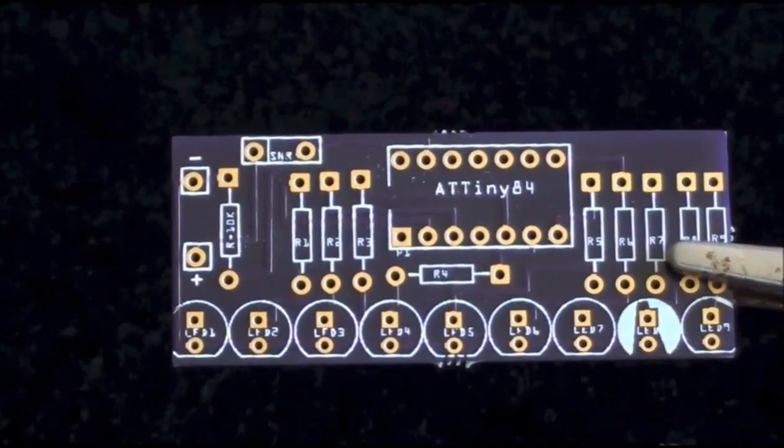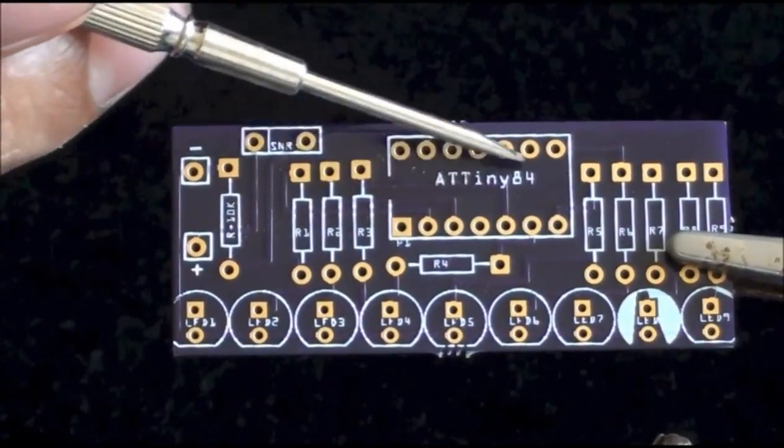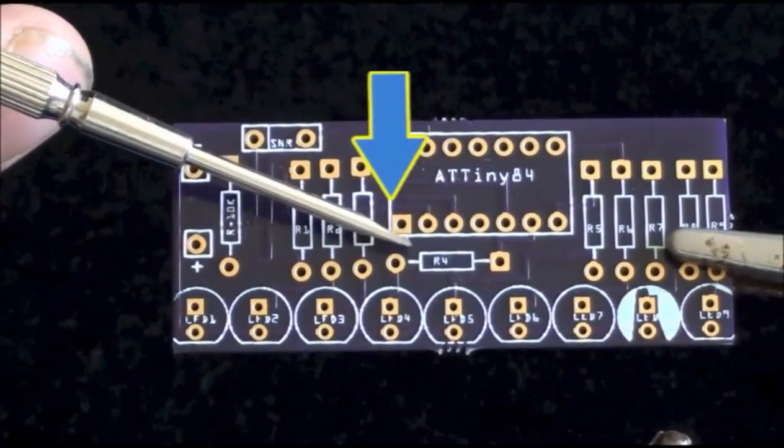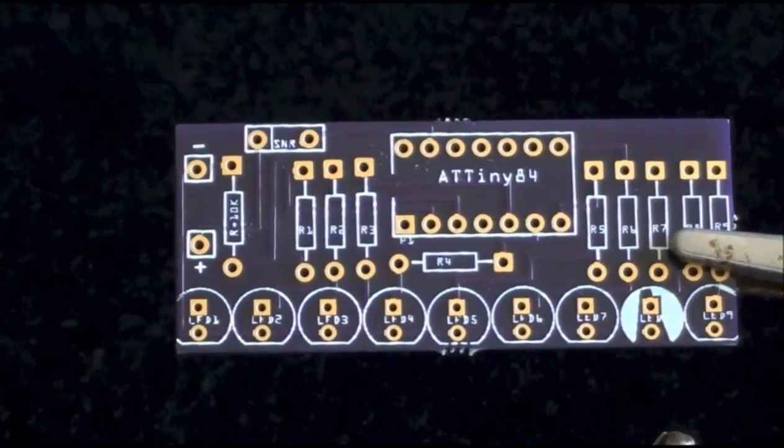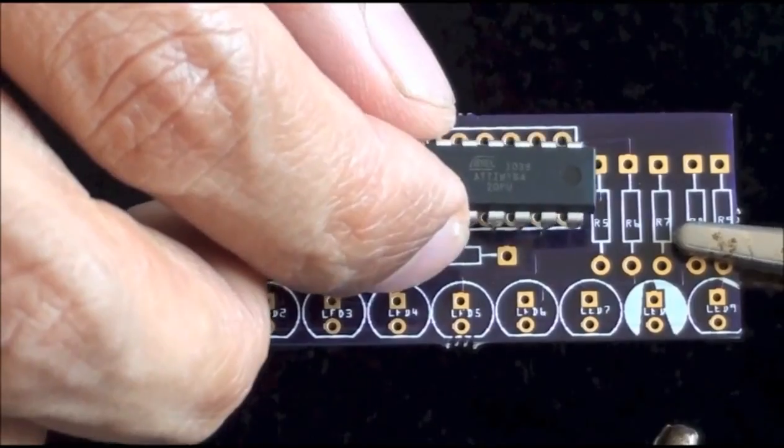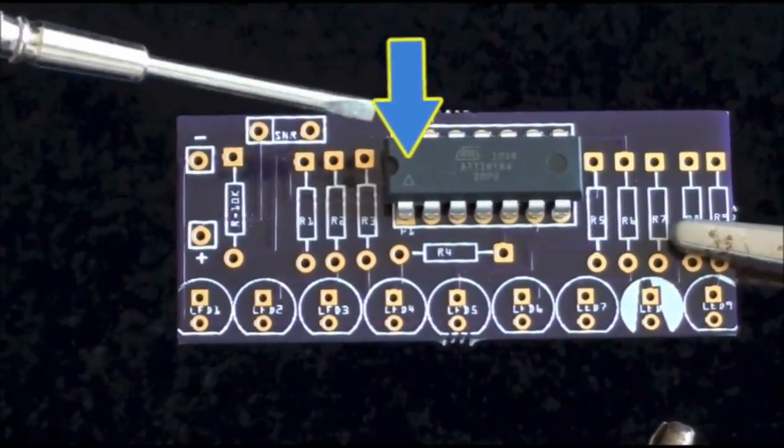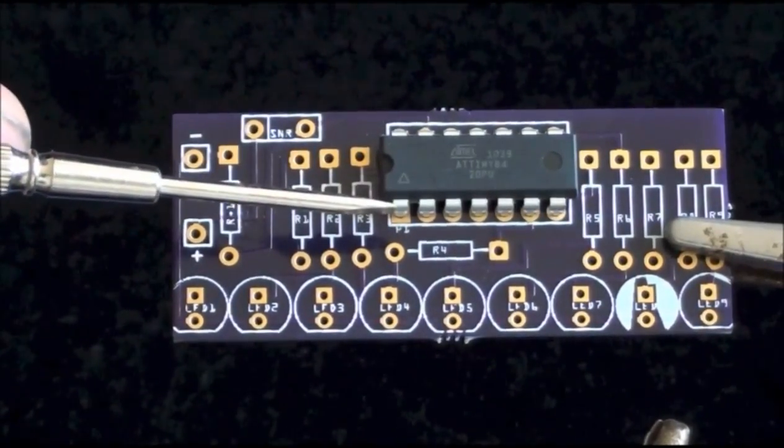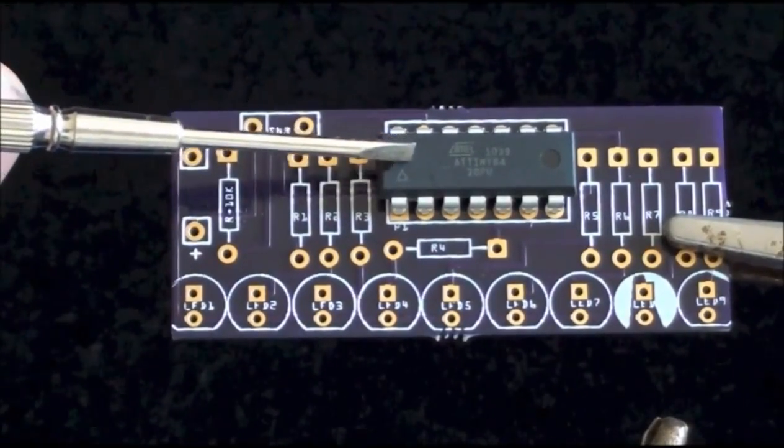We will start with the PCB. You will notice that the PCB contains an area labeled ATtiny84. In that area, you will find 14 pinholes. One of the pinholes is square, while the rest are circles. This pinhole is also labeled P1, which stands for pin 1. We will be taking the microcontroller and placing it on the board, so that the triangle on the microcontroller lines up with the pinhole that is labeled pin 1.